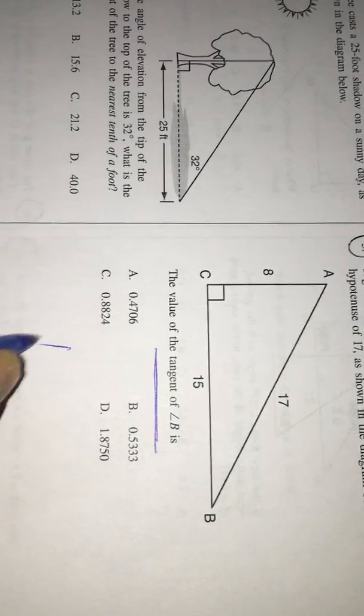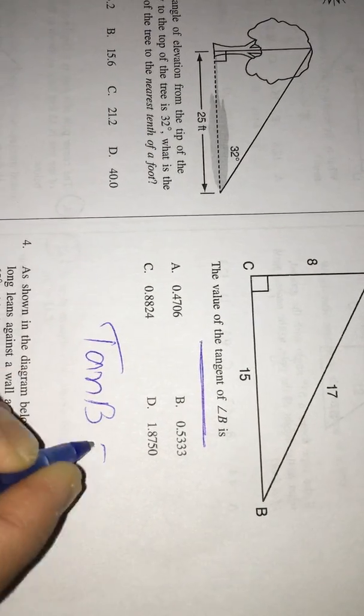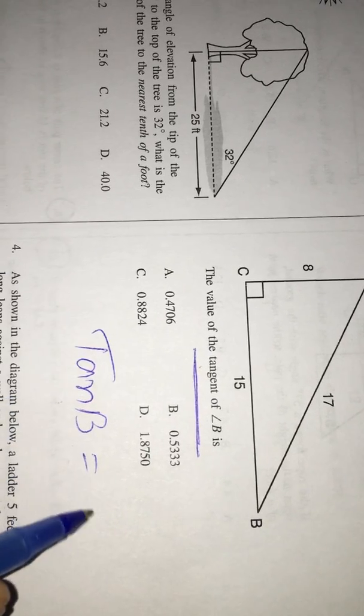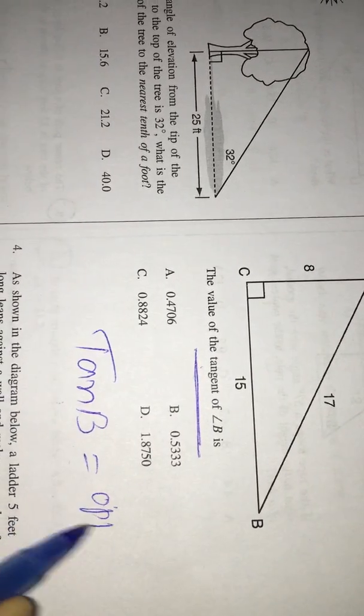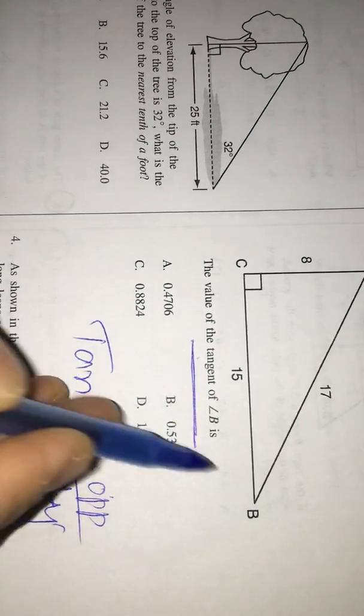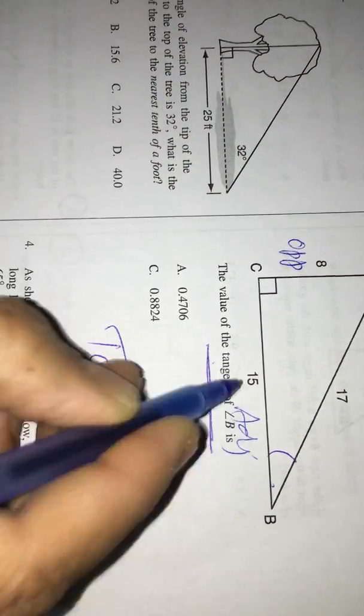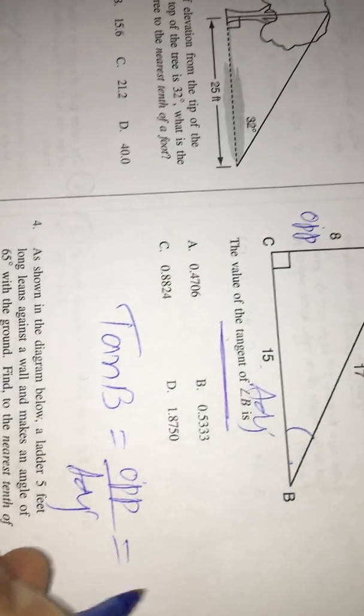Tangent of angle B means tan B. And the definition of tan is opposite over adjacent. And for this angle B, the opposite is this one and the adjacent side is next to it, this one. That means 8 over 15.